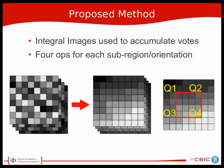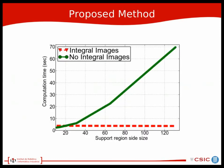A key factor for our descriptor is that we can use integral images to accumulate the votes for each sub-region. We only need four operations for each sub-region of each descriptor once the integral images are computed. This allows us to extract descriptors very fast regardless of the support region size defined, and having a large support region is also key to achieving good performance in our task.